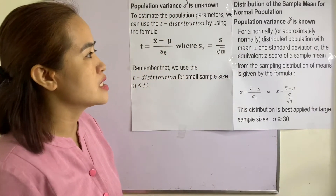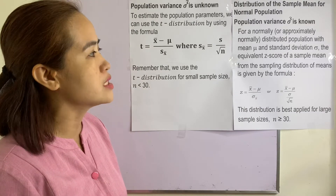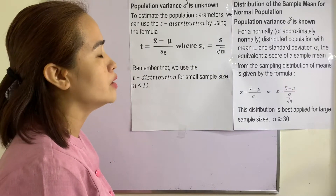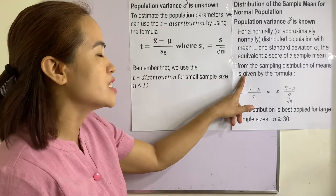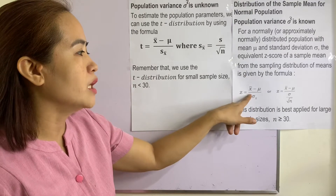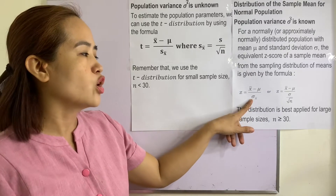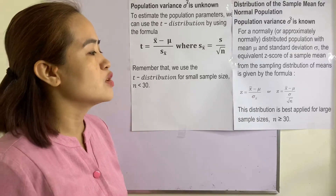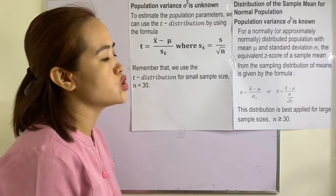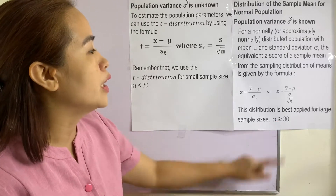When population variance is known, for a normally distributed population with mean mu and standard deviation sigma, the equivalent z-score of a sample mean from the sampling distribution of means is given by: z equals the sample mean minus the population mean, divided by the standard deviation of the sampling distribution of the sample mean. This distribution is best applied for large samples only — that is, your sample size is greater than or equal to 30.